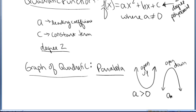And when a is a negative number, when that number in front of x squared is negative, you know the graph will open down.